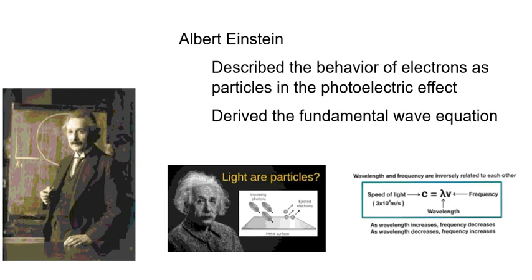During the time all this was going on, we have Albert Einstein, who did a lot of things, but two in particular things that we want to talk about, is he did describe the behavior of electrons as particles in the photoelectric effect. Now, the photoelectric effect, if you ever had a solar-powered device, light hits it, knocks electrons off, and we use those electrons in the circuit. That shows that electrons are particles.